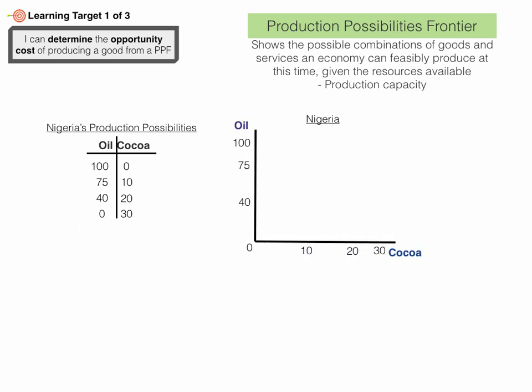We take these production possibilities and plot them on a graph. On each axis is one of the goods — here oil is on the y-axis and cocoa is on the x-axis. We plot the points: 100 oil and 0 cocoa; 75 oil and 10 cocoa; 40 oil and 20 cocoa; and 0 oil and 30 cocoa. Connect the points and there is our production possibilities frontier, or production possibilities curve. Any point on this curve represents a potential production possibility for Nigeria — no point is better or more efficient than another.